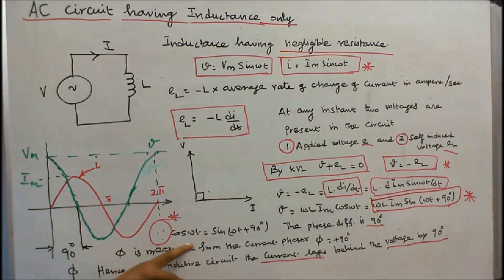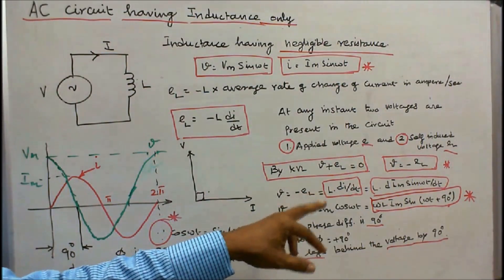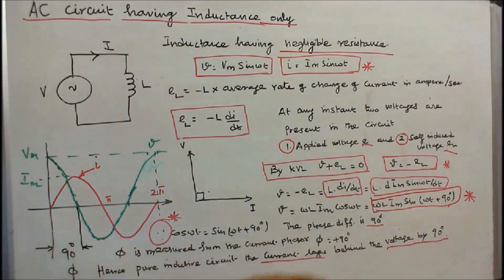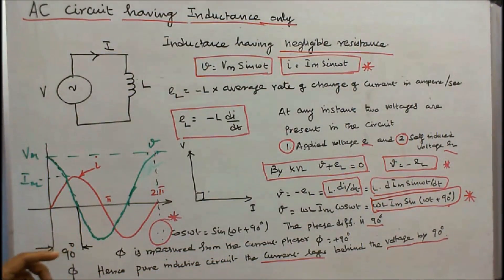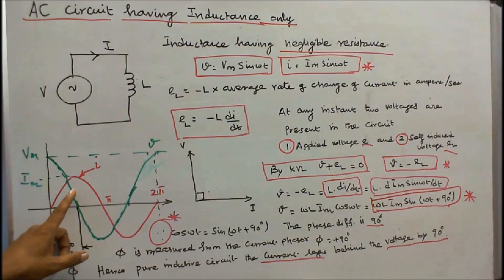cos(ωt) can be written as sin(ωt + 90°), therefore V = ω × L × Im × sin(ωt + 90°). The phase difference is 90°, measured from the current phase, which is +90°. Hence in a pure inductive circuit, the current lags behind the voltage by 90 degrees.